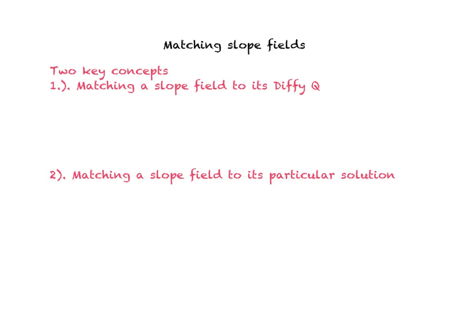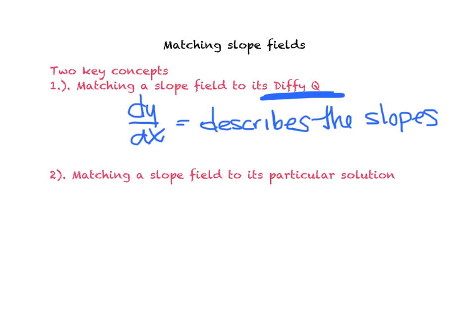The first one is matching a slope field to its Diffie Q. So since we're talking just differential equations, we're basically saying dy/dx, and we're saying this describes the slopes of each tiny line segment. So that's the key when we're matching the slope field to its Diffie Q.